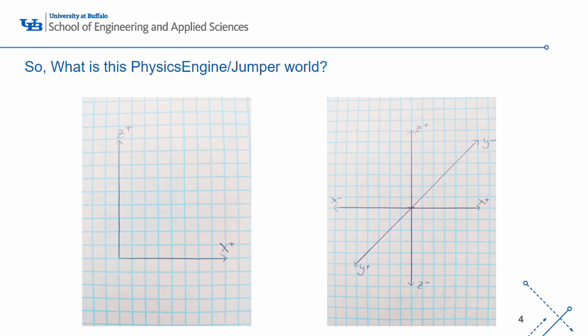So, what is this Physics Engine Jumper world? It's a 3D world with dimensions X, Y, and Z. Since your screen is 2D, you won't be able to see the Y axis. The Z axis is parallel to the left and right sides of your laptop. The X axis is parallel to the top and bottom of your laptop. Meanwhile, the Y axis is pointing out towards you. There is a constant acceleration due to gravity in the negative Z direction. Negative Z is down, positive Z is up, and the ground is at the plane Z equals 0.